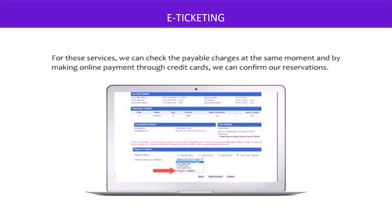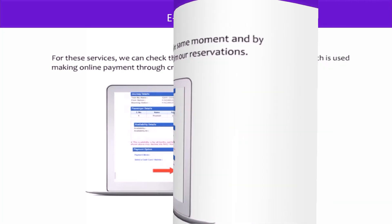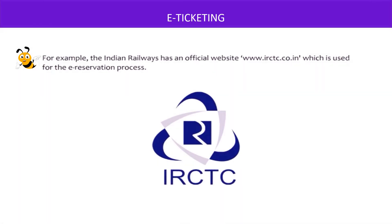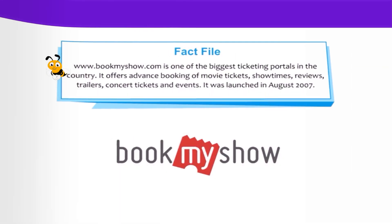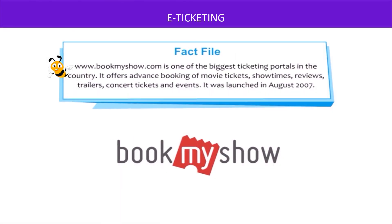By making an online payment through credit cards, you can confirm your reservation as well. For example, the Indian Railways has an official website — www.irctc.co.in — which is used for e-reservation purposes. It includes services like checking availability of tickets, booking and cancellation of tickets, and printing e-tickets, etc.